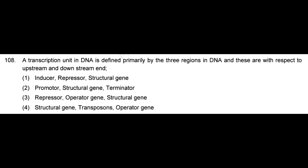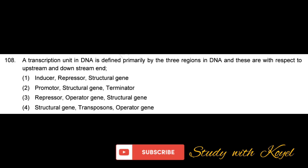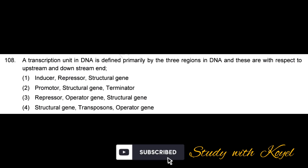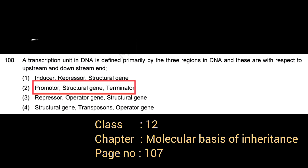A transcription unit in DNA is defined primarily by three regions in DNA. With respect to upstream and downstream end — correct answer: option 2, promoter, structural gene, terminator.